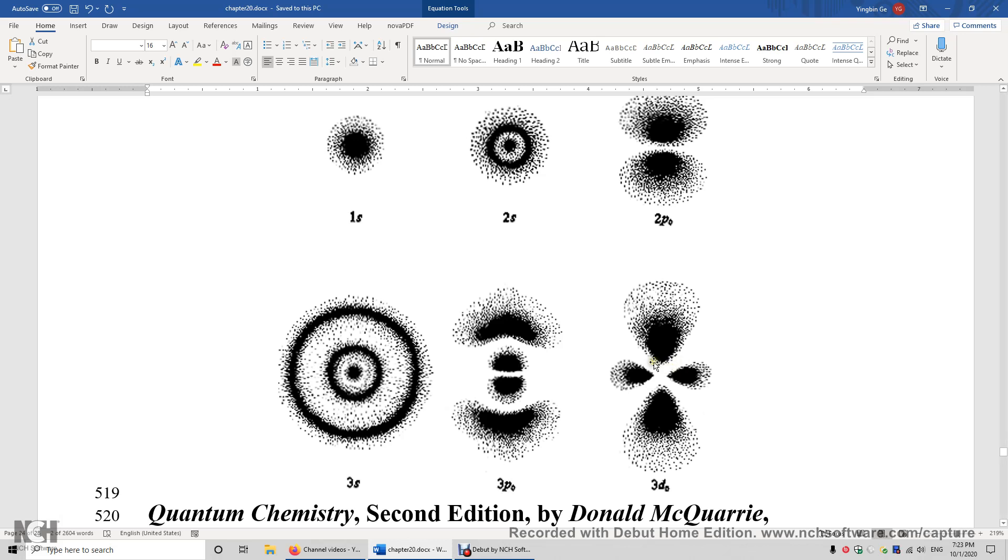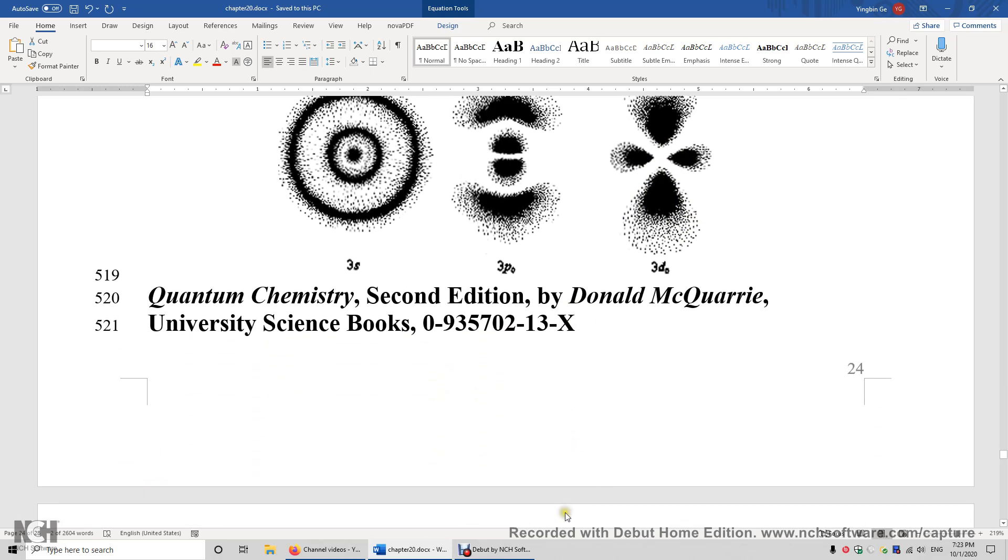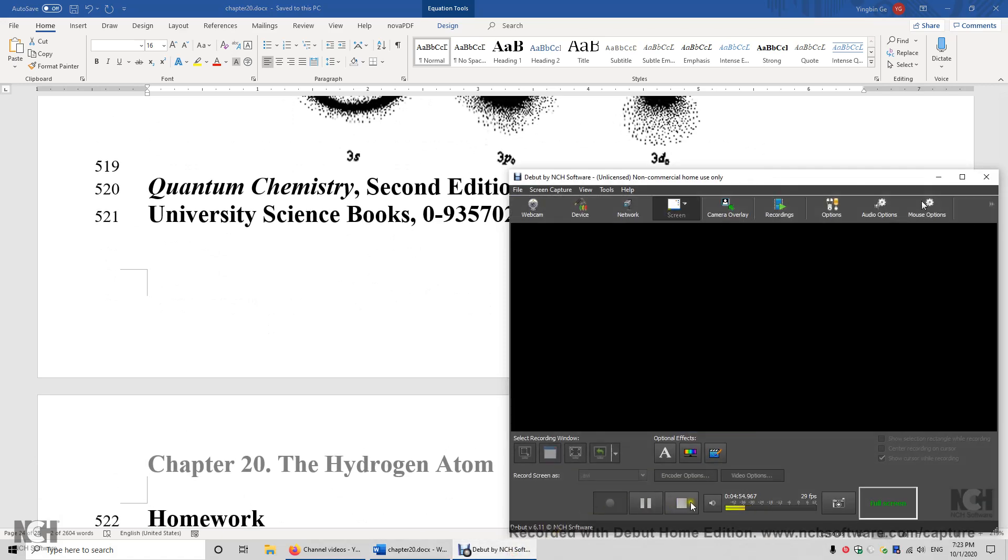So you have to imagine two nodal surfaces with a cone shape. So you have one cone here. Imagine this is a cone. This lobe is your ice cream. You have a cone here. And the angle between this and the z-axis is 55 degrees. You have another cone upside down. You have your ice cream upside down. The angle is 125 degrees.